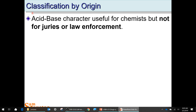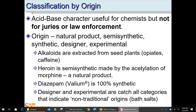There are other ways to classify drugs — by origin or chemical nature. Acid-base character is useful for chemists but doesn't mean anything to a jury. We talk about different origins: plant extract, alkaloid, semisynthetic — like heroin being made from morphine. Morphine is a plant extract and an alkaloid, but heroin is semisynthetic. You add acetyl groups onto the OH groups of morphine to make heroin. They thought it would be less addictive — they were wrong. It's more addictive. Then you have fully synthetic drugs like diazepam or Valium, 100% made in the lab. And now there are experimental or designer drugs, a catch-all category, including bath salts.